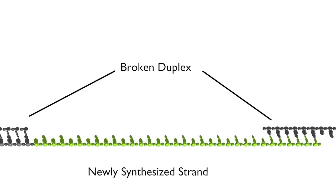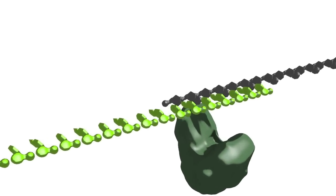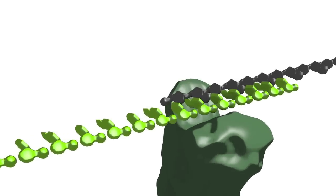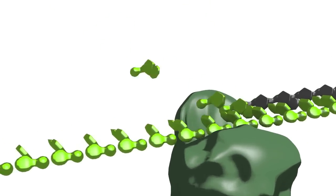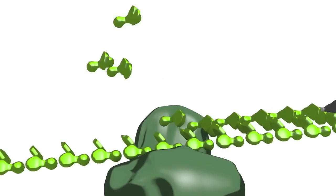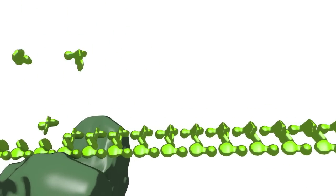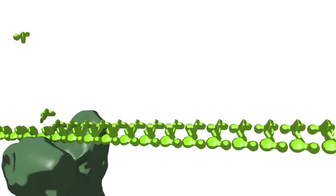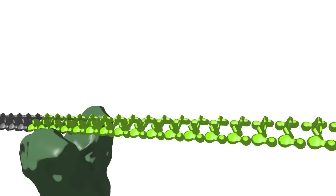The newly captured 3'-hydroxy end of the broken duplex then serves as a primer for new DNA replication across the break and extending to the other side of the break. Remaining gaps are then filled by replication and ligation.